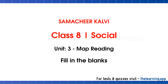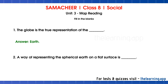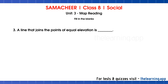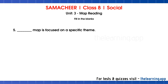Fill in the blanks. Question 1: The globe is the true representation of the dash. Correct answer is earth. Question 2: A way of representing the spherical earth on a flat surface is dash. Correct answer is map. Question 3: A line that joins the points of equal elevation is dash. Correct answer is Isoline. Question 4: Cadastral maps are usually maintained by dash. Correct answer is government. Question 5: Dash map is focused on a specific theme. Correct answer is thematic.